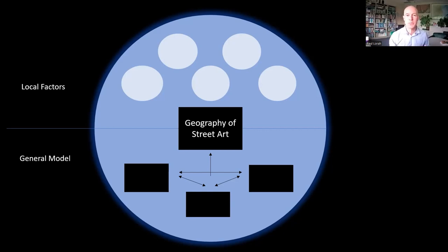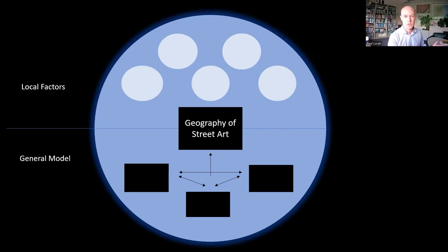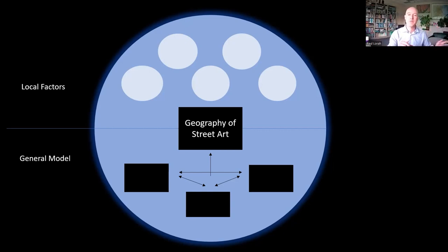Basically, the variables we used to predict the location and distribution of street art were based on a survey done at one point in time — over about a three-month period with faculty and students. So there's not really a temporal component in the GIS portion of this. But that's kind of interesting: we're really interested in how space and place shapes art. You get the geography of art, and art can shape place. There's this back and forth between people and the environment that shapes landscapes. If you figure out what's going on with the geography of street art in one place at one time, you can come back later and do the analysis again because these landscapes evolve over time.